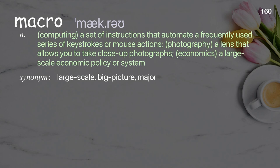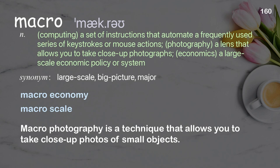Macro: in computing, a set of instructions that automate a frequently used series of keystrokes or mouse actions; in photography, a lens that allows you to take close-up photographs; in economics, a large-scale economic policy or system. Examples: macroeconomy; macroscale. Macro photography is a technique that allows you to take close-up photos of small objects.